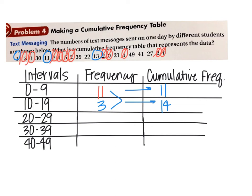And now I'll do 20 to 29. So any one that starts with a 2. It's 22, 21, and 27. So that's 3. And then you take all of these and put it there. So it's 14 plus 3, which is 17.